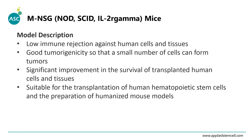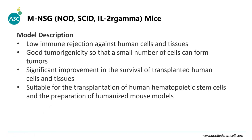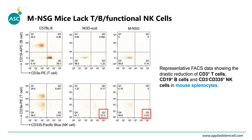NSG is a severely immunocompromised mouse, which causes low immune rejection against human cells and tissues. This makes it a useful model for xenograft tumor research, as this mouse has good tumorigenicity — a small number of tumor cells can form tumor tissue. This model significantly improves the survival of transplanted human cells and tissues, and is suitable for transplantation of human hematopoietic stem cells and preparation of humanized mouse models.